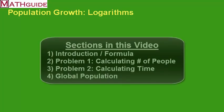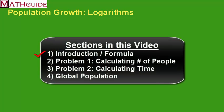There's going to be four sections to this video. In our first section, we're going to introduce the topic, talk about what population growth is, and divulge the formula and what the variables stand for. In our second section, we're going to talk about our first problem, which we'll predict the number of people after a certain amount of time. In our third section, we'll talk about another problem. We're going to calculate time, given some population values. In our fourth section, we're going to conclude and talk about global population. Let's get started.